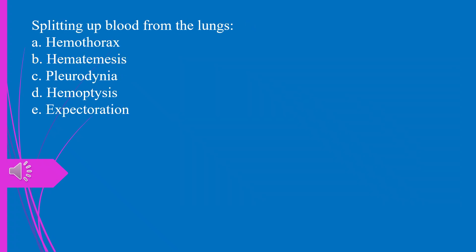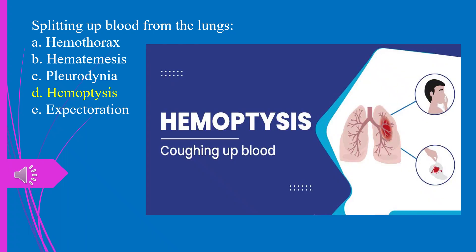Question 34. Spitting up blood from the lungs: a) hemothorax, b) hematemesis, c) pleurodynia, d) hemoptysis, e) expectoration. The answer is d, hemoptysis.